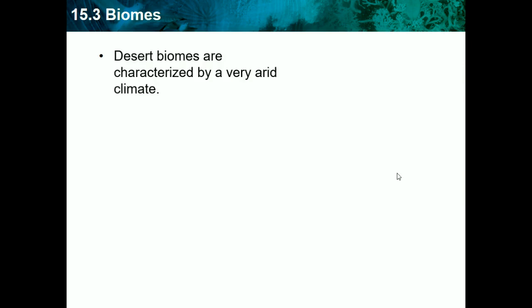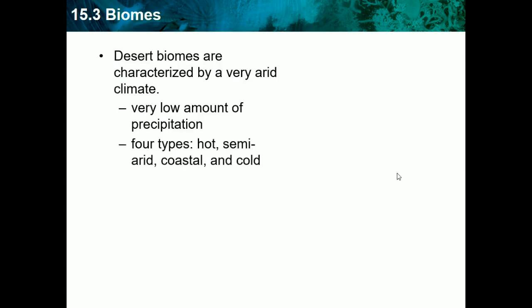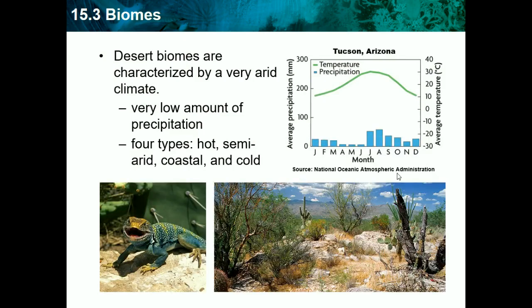Desert biomes are characterized by a very arid climate — arid meaning lack of rain and hot — with very low amounts of precipitation. There are four types: hot, semi-arid, coastal, and cold, but we don't need to know those. Basically, we already know what a desert is: it's hot, it doesn't rain, and it's dry.